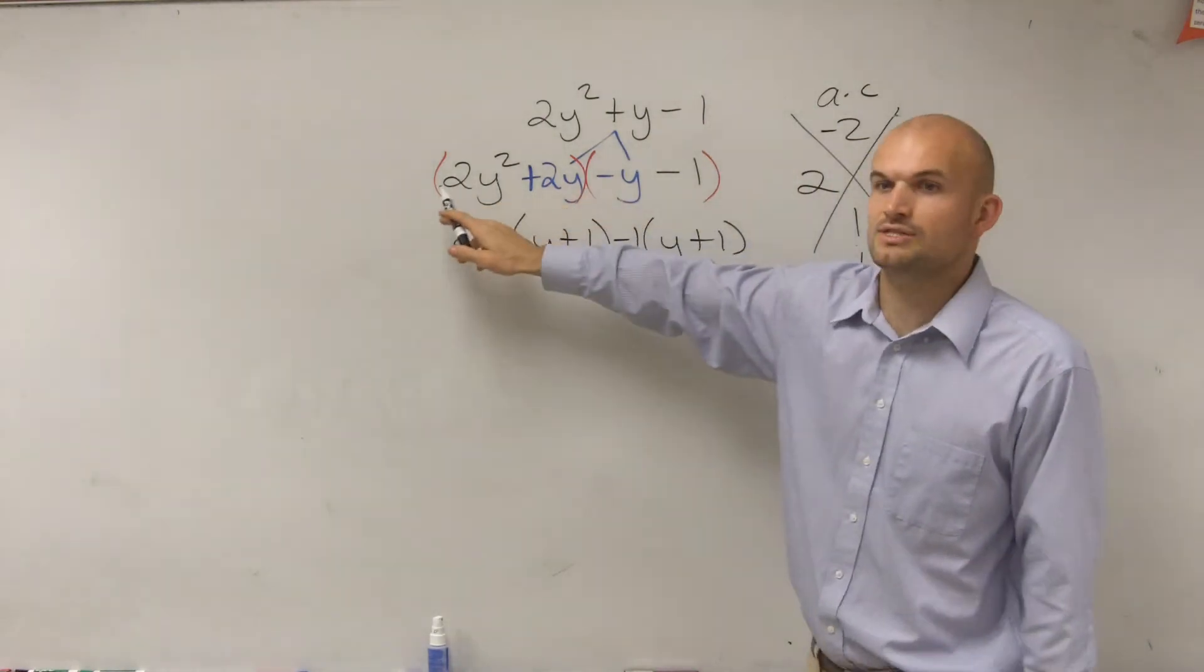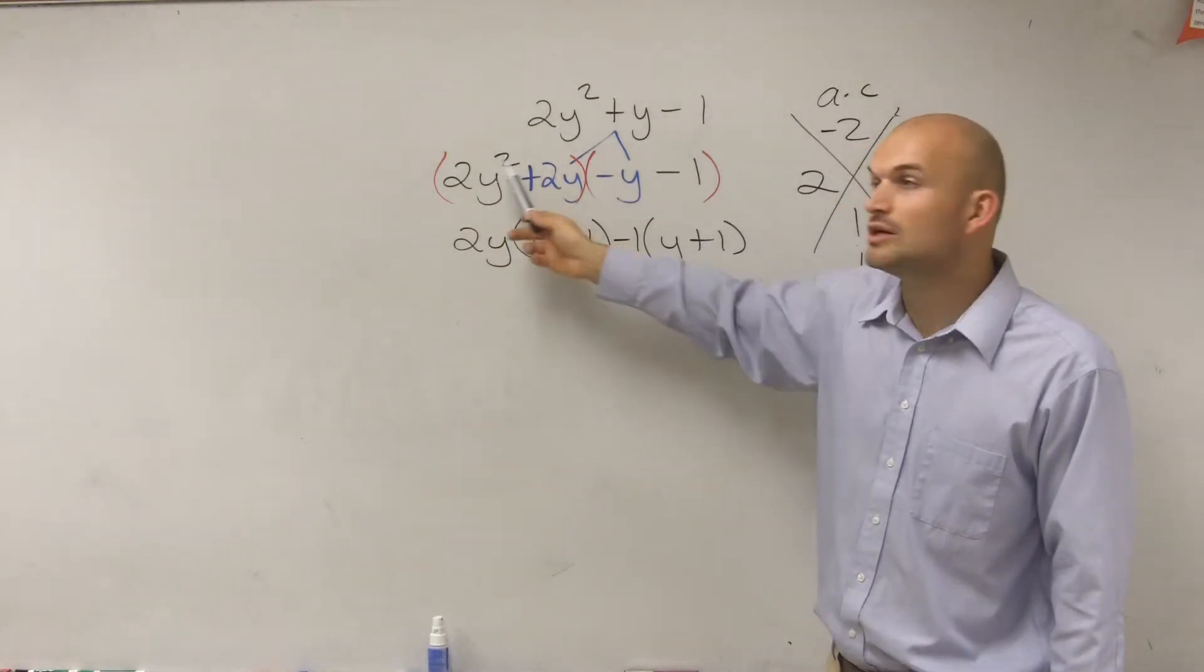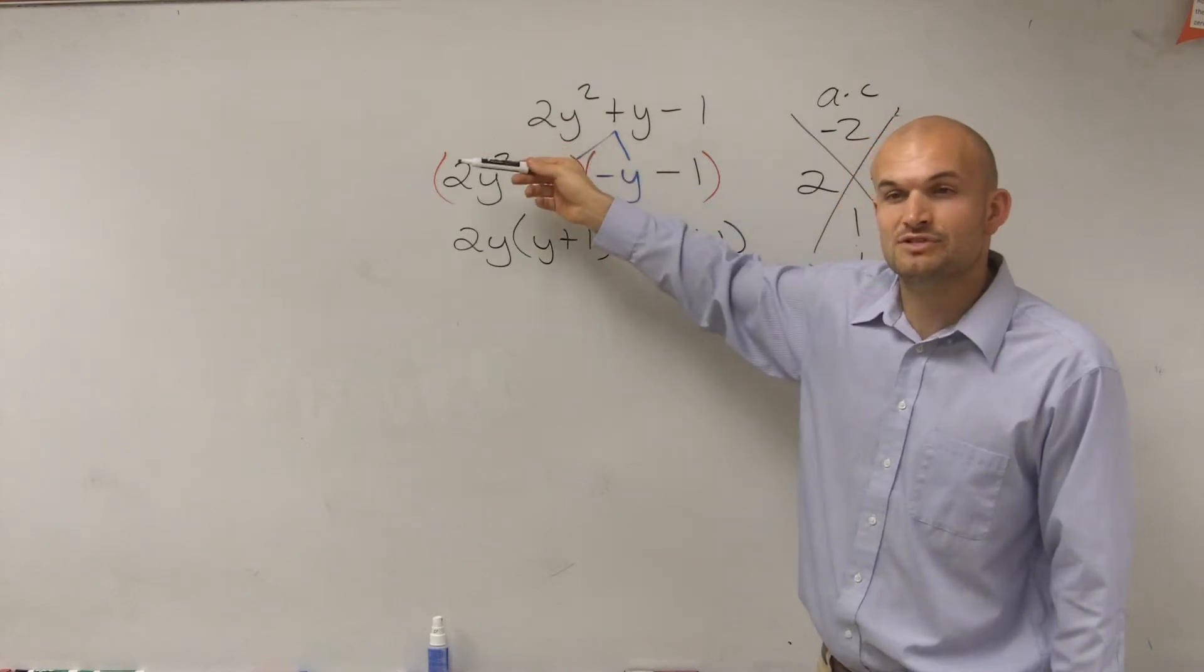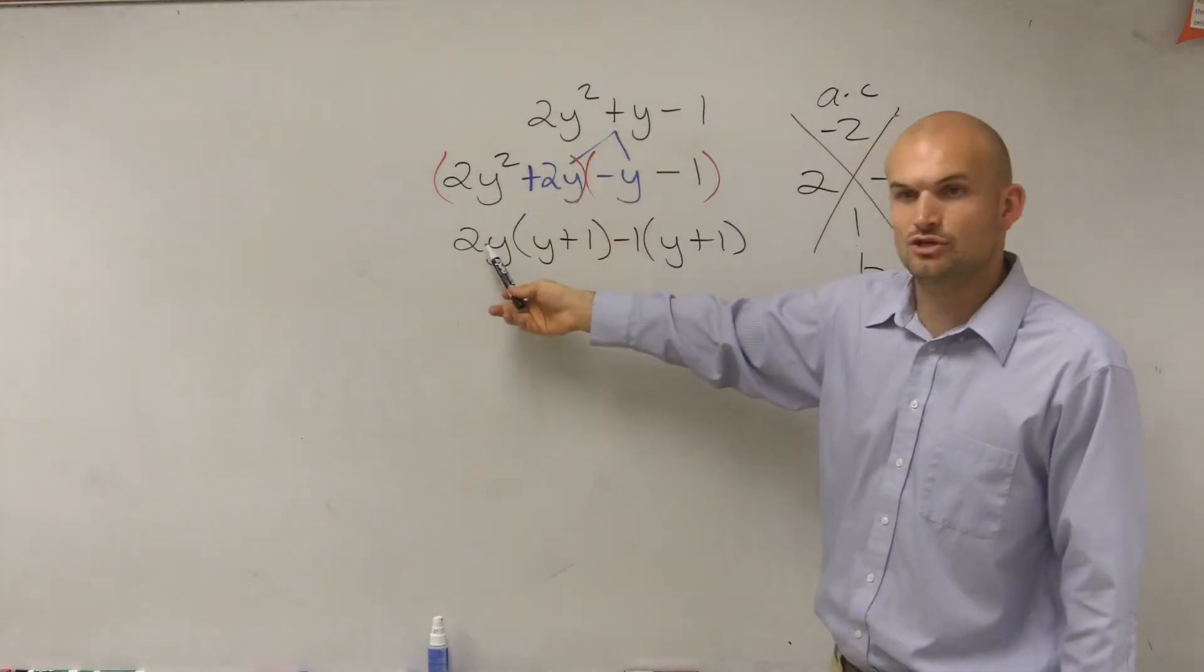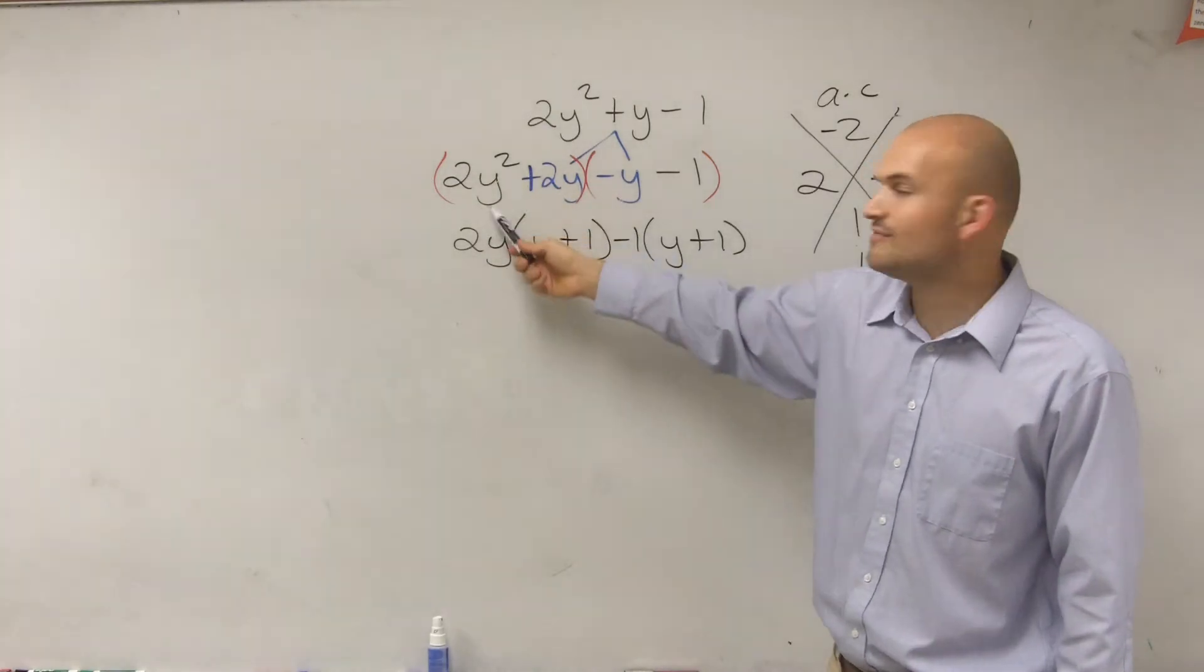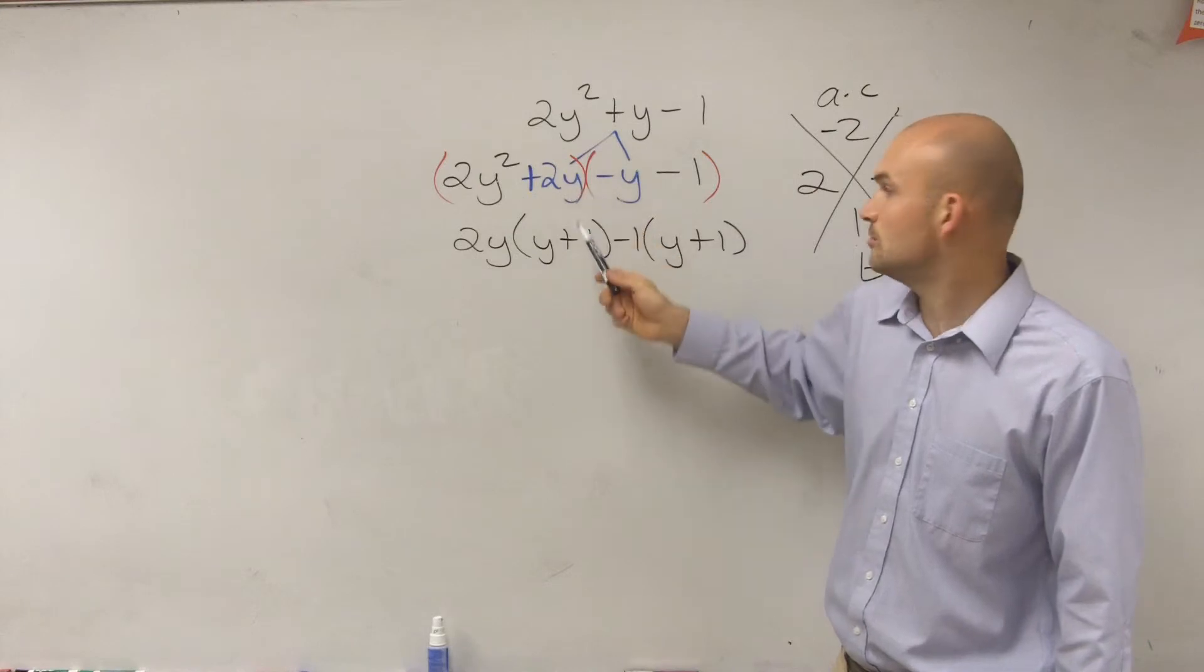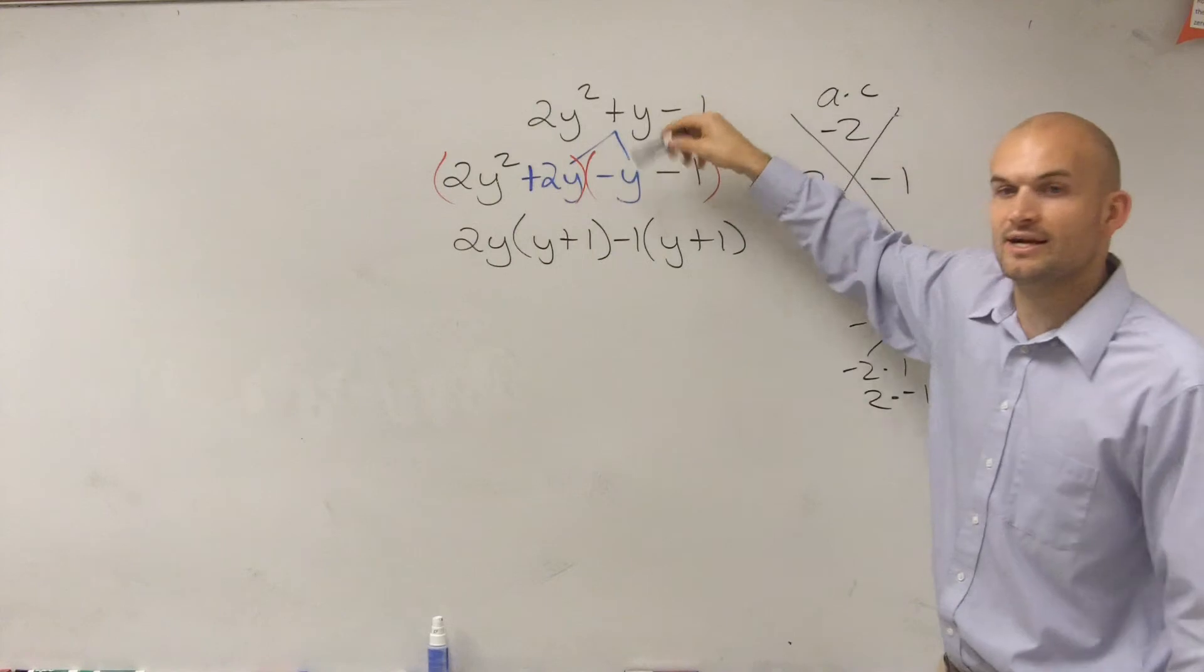Well remember, when we look at this, what is the GCF? What divides into both of these? 2 and y divides into both of them. So remember, what do we do when we have the GCF? Divide both terms by your GCF. So your GCF is 2y. What's 2y squared divided by 2y? y. What's 2y divided by 2y? 1. Does that make sense? That's how I got the y plus 1.